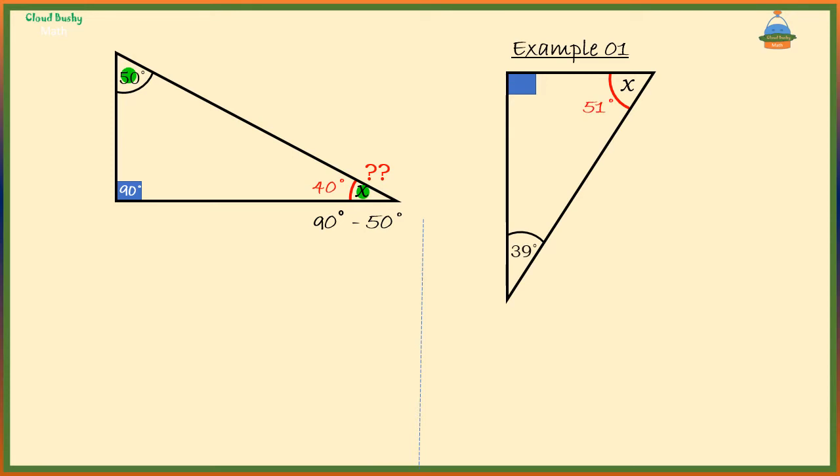We don't necessarily need to add all the angles because we already know this is 90 degrees, so we are only short of 90 degrees if we are to have a total of 180 degrees in this triangle. So these two should give us 90 degrees.